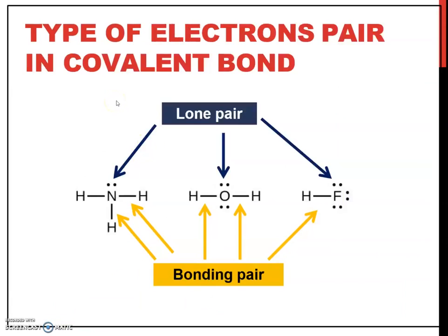For electron pairs in covalent bonds, there are two types. For bonding pairs, bonding pairs in covalent bonds means that the electron pair will be shared by the atoms. For example, in ammonia NH3, there are three bonding pairs. For H2O, two bonding pairs. For HF, one bonding pair.